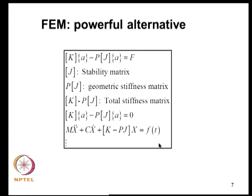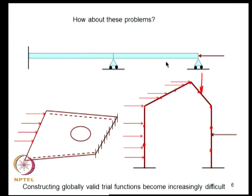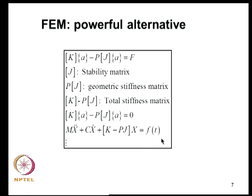To tackle this problem we use the finite element method. In the Rayleigh-Ritz and Galerkin's methods, globally valid trial functions are needed, which is not possible for complex built-up structures. Instead, in FEM we divide the domain into subdomains, interpolate field variables within each subdomain in terms of nodal values, and assemble the structure. This leads to an equilibrium equation of the form (K - P·J)U = 0, where J is the stability matrix, P·J is the geometric stiffness matrix KG, and K - P·J is the total stiffness matrix KT.